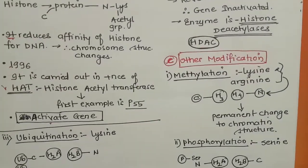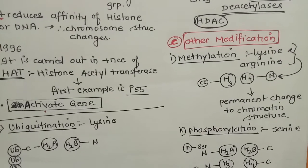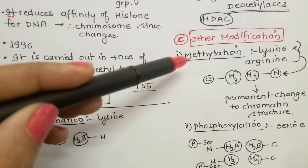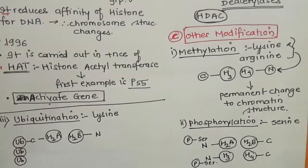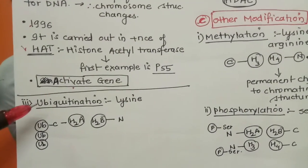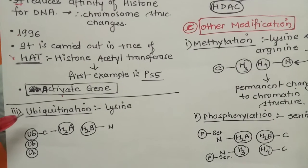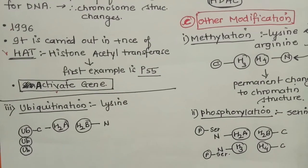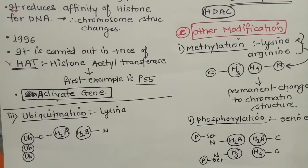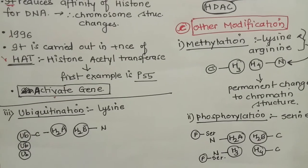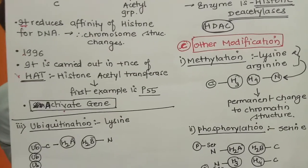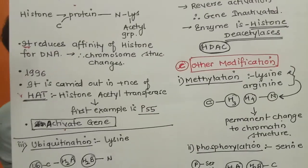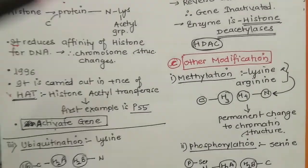Apart from acetylation and deacetylation, there are some other modifications. First is methylation - addition of a methyl group. Likewise, phosphorylation - addition of a phosphate group. The third is ubiquitination - addition of a ubiquitin protein to the histone, either towards the N-terminal or C-terminal. You need to remember where each modification occurs: where the methyl group is added, where the phosphate group is added, and where acetyl group was added. Acetyl group was added at the N-terminal of histone on the lysine residue.